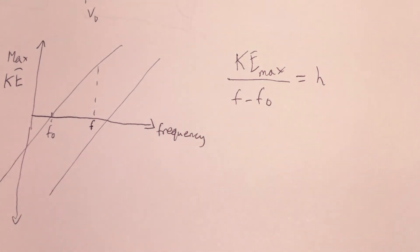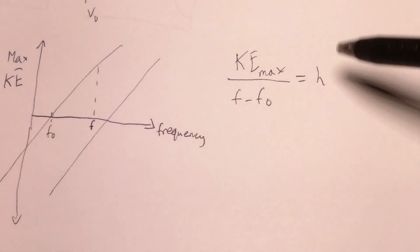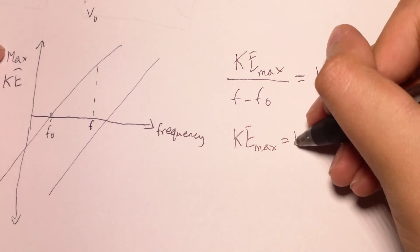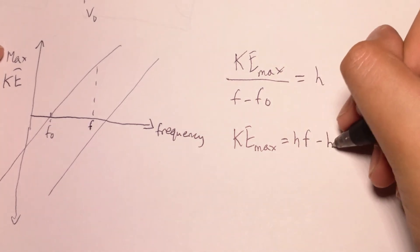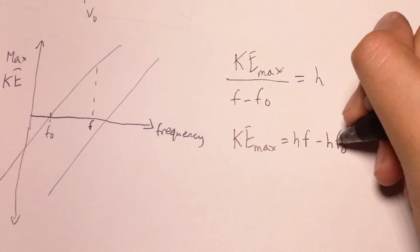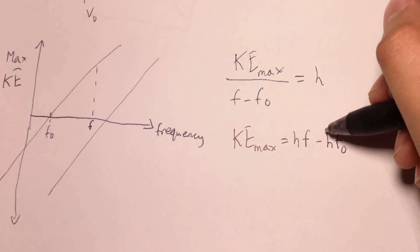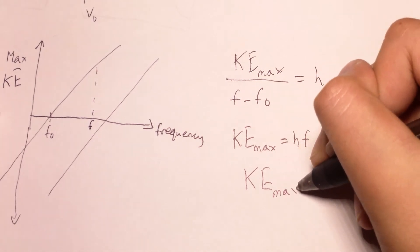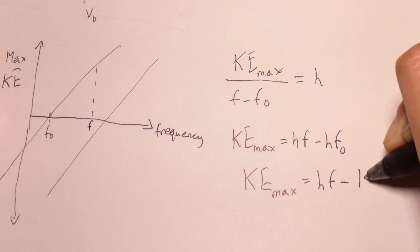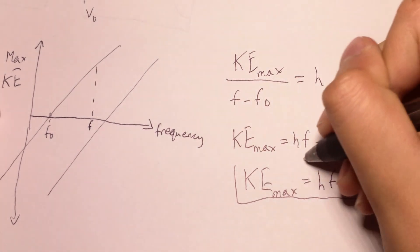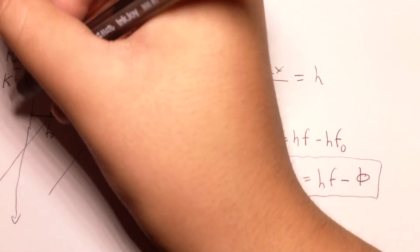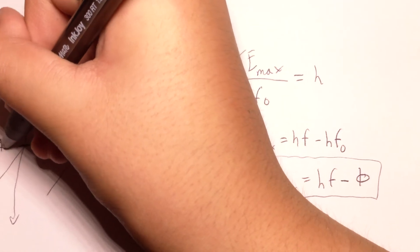So for every metal, the slope is the same, but it'll have different x and y intercepts. And there's another useful equation which you can get from turning this around, which is that the maximum kinetic energy equals Planck's constant times the frequency minus Planck's constant times the threshold frequency. And Planck's constant times the threshold frequency is often labeled the work function and the work function is often denoted with phi. This is a very useful equation. And another elegant thing which arises from this picture is that the y-intercept of the line is the work function.